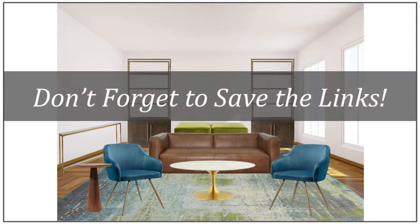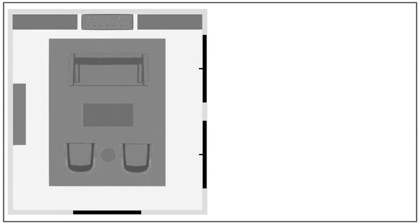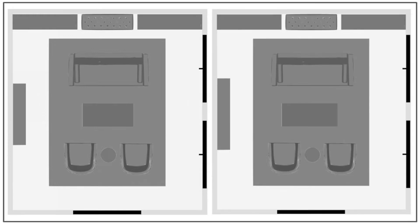I've also made sure to store all of the links to these pieces so I can go back to purchase them when I'm ready. An important note: make sure to double check the sizes of the pieces you selected. I double checked and ended up making a few minor adjustments to the length of the sofa, coffee table, and console table. Fortunately, this didn't create any issues with spacing between pieces.